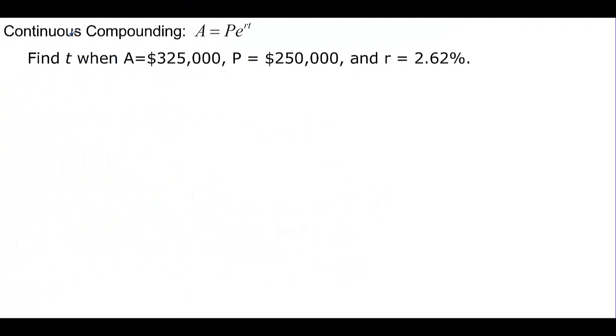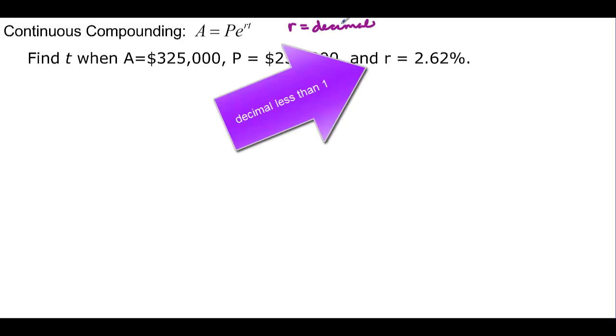So now we have our final kind of compounding interest and that's our continuous. This gives us A, the amount that we're going to accumulate. And then the P is the same thing, the beginning amount, times e, that natural number, raised to the r times t. Remember here that r is going to be a decimal.